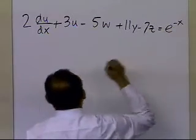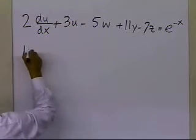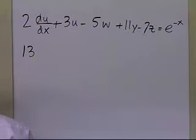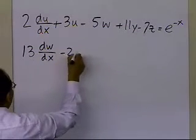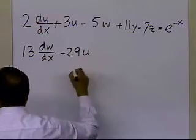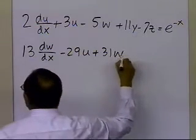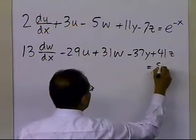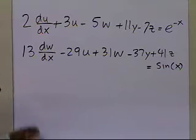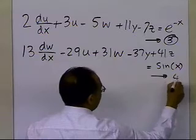So you can already see that by making these substitutions, I don't have any second derivative terms now — I have only first derivative terms. Same thing I'll do to the second differential equation, which is 13 times the second derivative of z with respect to x — that'll become first derivative of w with respect to x — minus 29 times first derivative of y with respect to x, that'll become u, plus 31 times first derivative of z, that'll become w, minus 37y, plus 41z, is equal to sin of x. So again, what you're finding out is that you have all these terms written there. So this becomes equation number 3, and this is equation number 4.